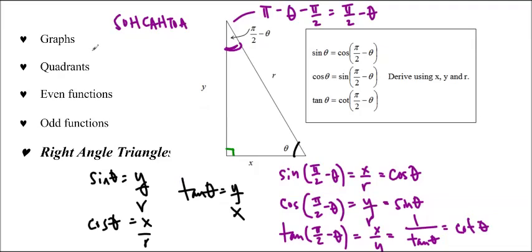Basically, we used graphs, we used the quadrants, we used even and odd functions, and we used right-angle triangles to find these co-function identities, which we will be using to answer some questions. Thanks for watching, hope that cleared everything up, and I will see you soon.